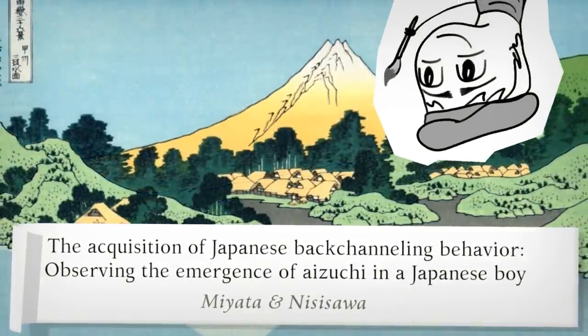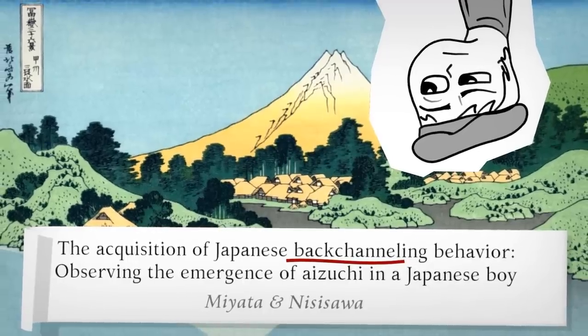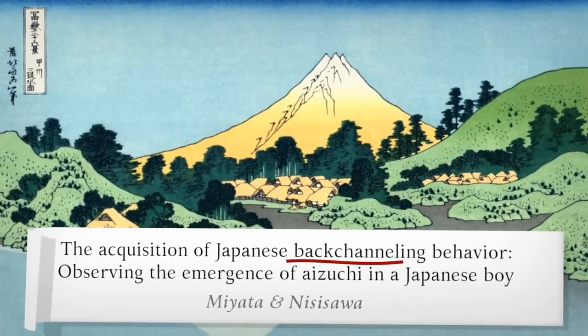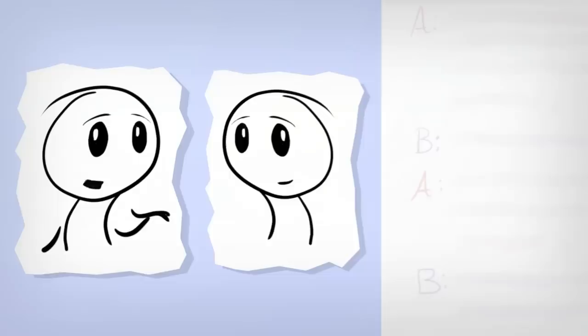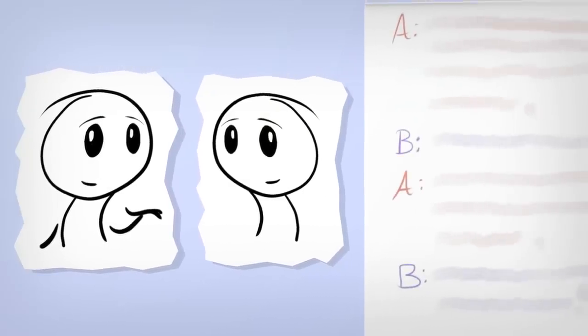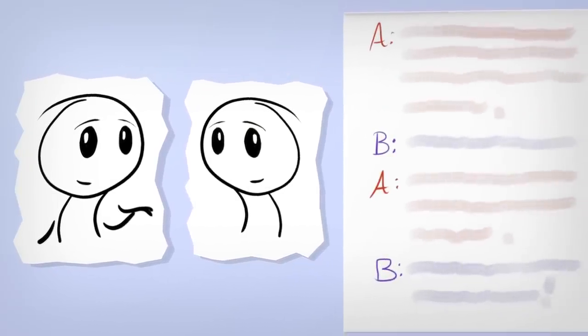Now, they used the word backchannel, a term coined in 1970 for short messages a listener gives back to a speaker. English also has overlapping backchannels. Japanese just does it more.